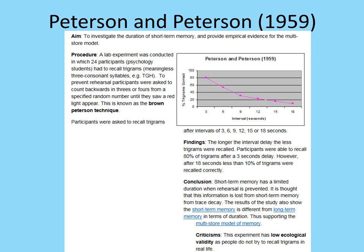Peterson and Peterson (1959) did a study that strongly supports the capacity of short-term memory as suggested by the multi-store model. In a lab experiment, 24 participants had to remember trigrams — meaningless three-consonant syllables, for example T, G, H. To prevent rehearsal, they were asked to count backwards in threes or fours from a specified random number until they saw a light appear. This is known as the Brown-Peterson technique.